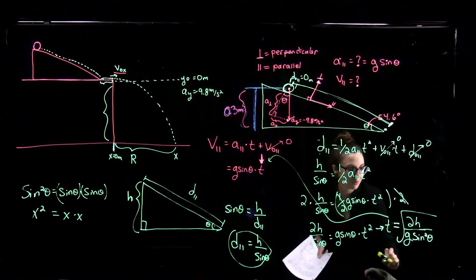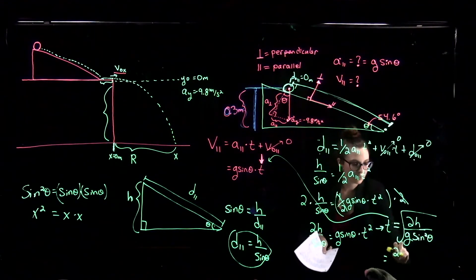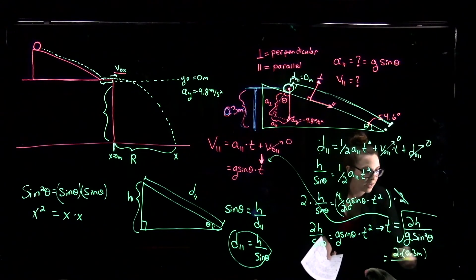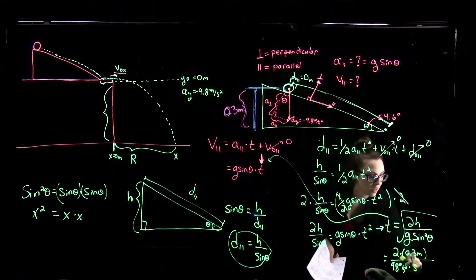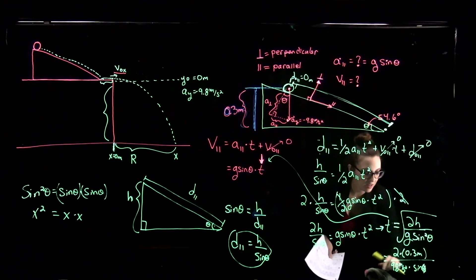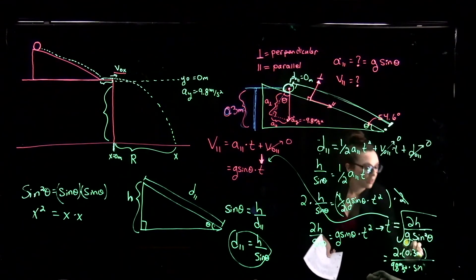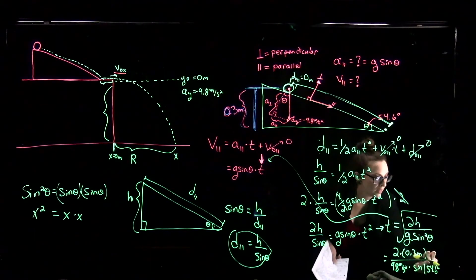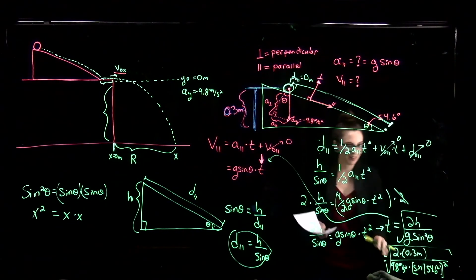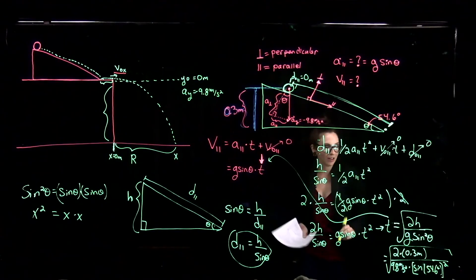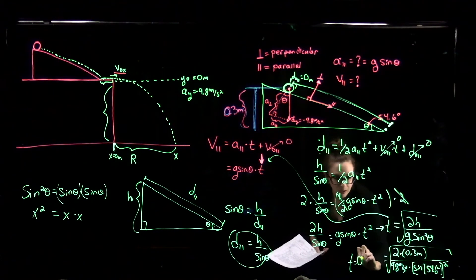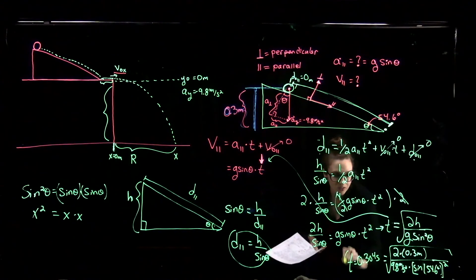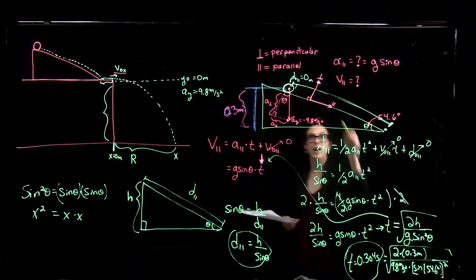Plugging in the numbers: T equals the square root of 2 times 0.3 meters, divided by 9.8 meters per second squared times sine squared of 54.6 degrees. Computing that gives T equal to 0.304 seconds — the time it takes for the ball to roll down the plane.